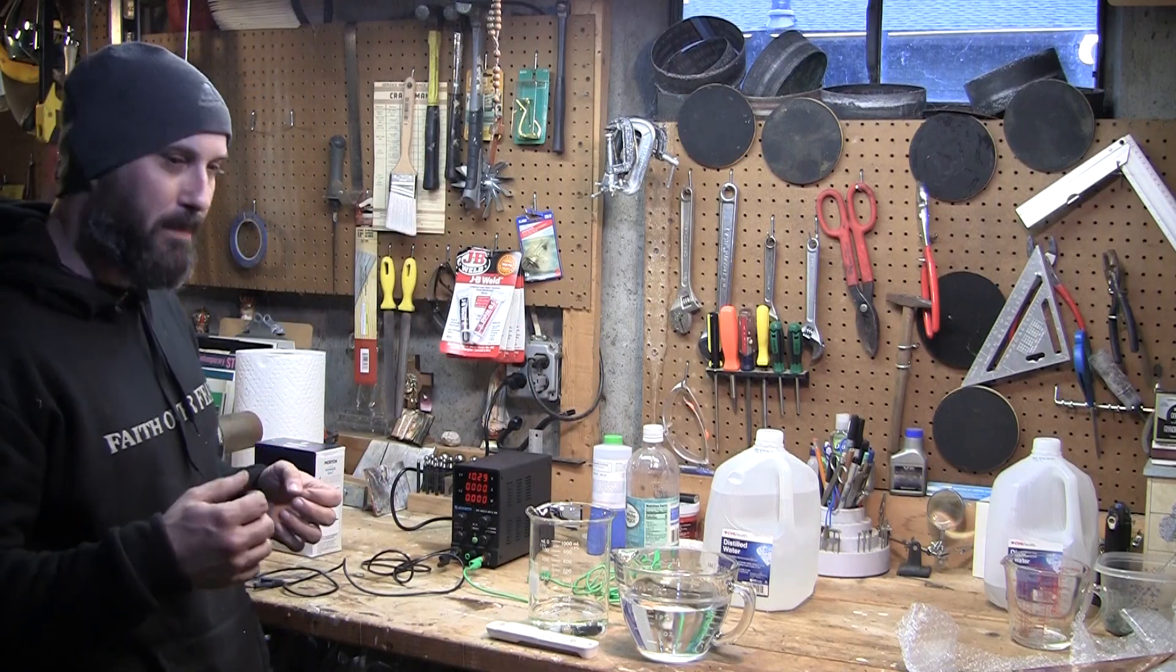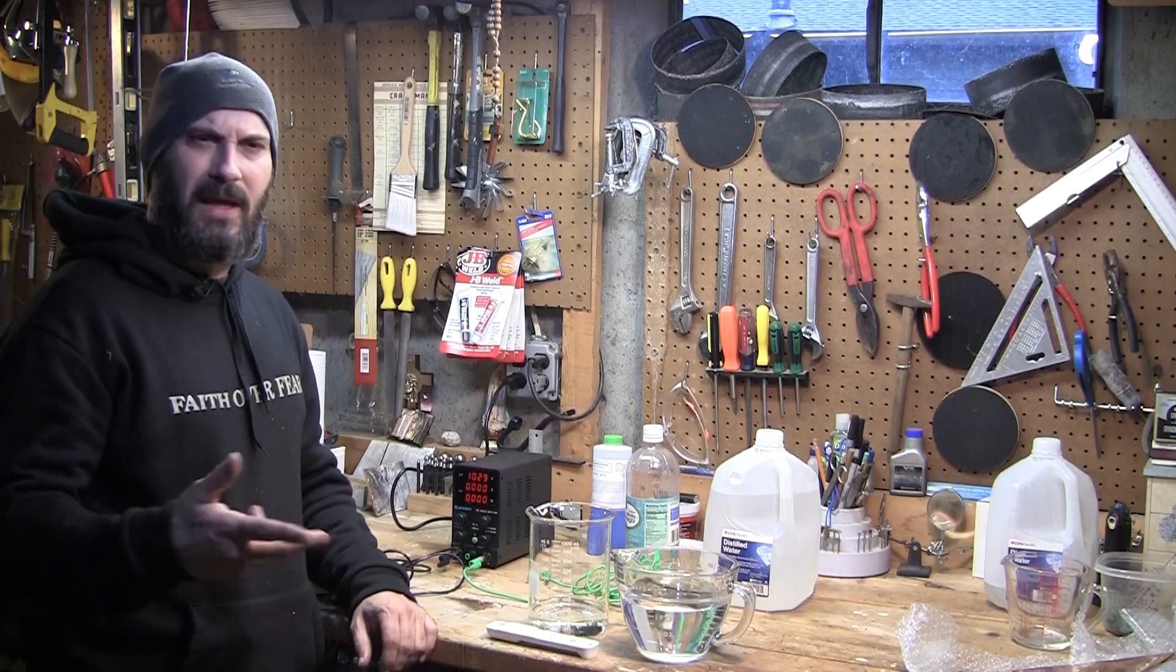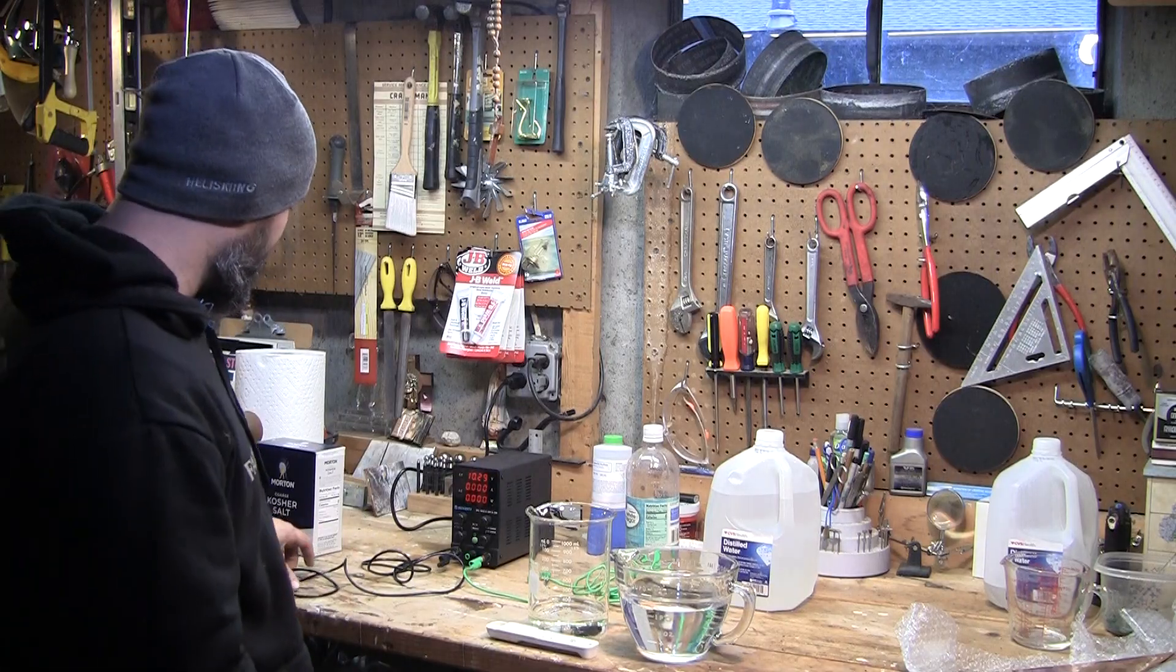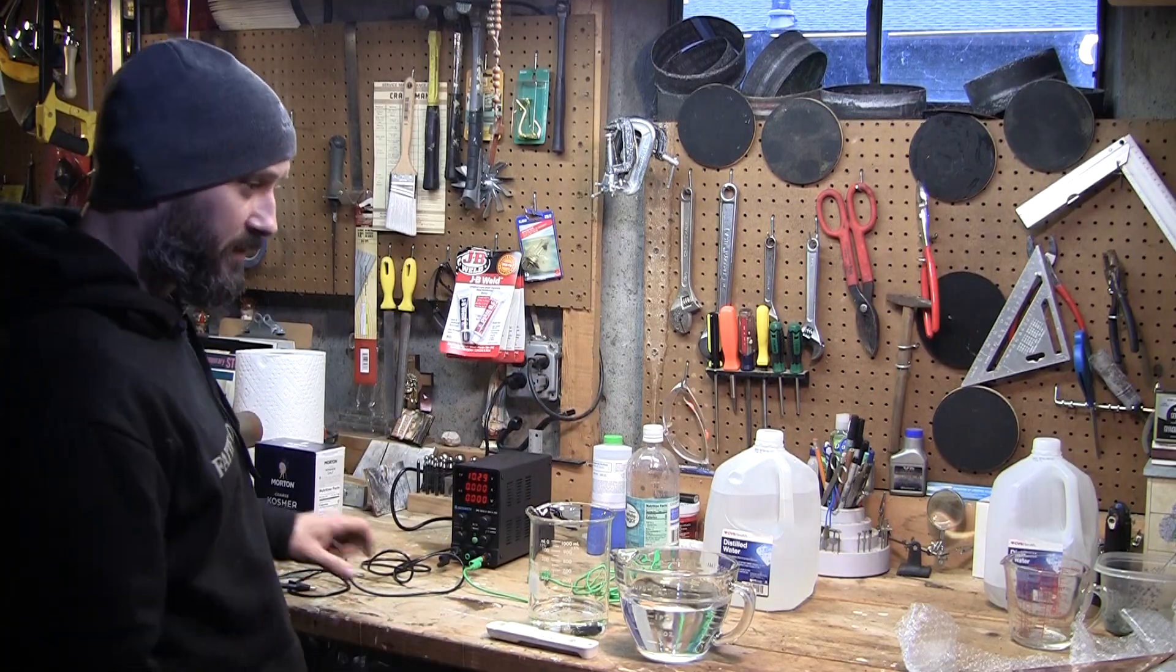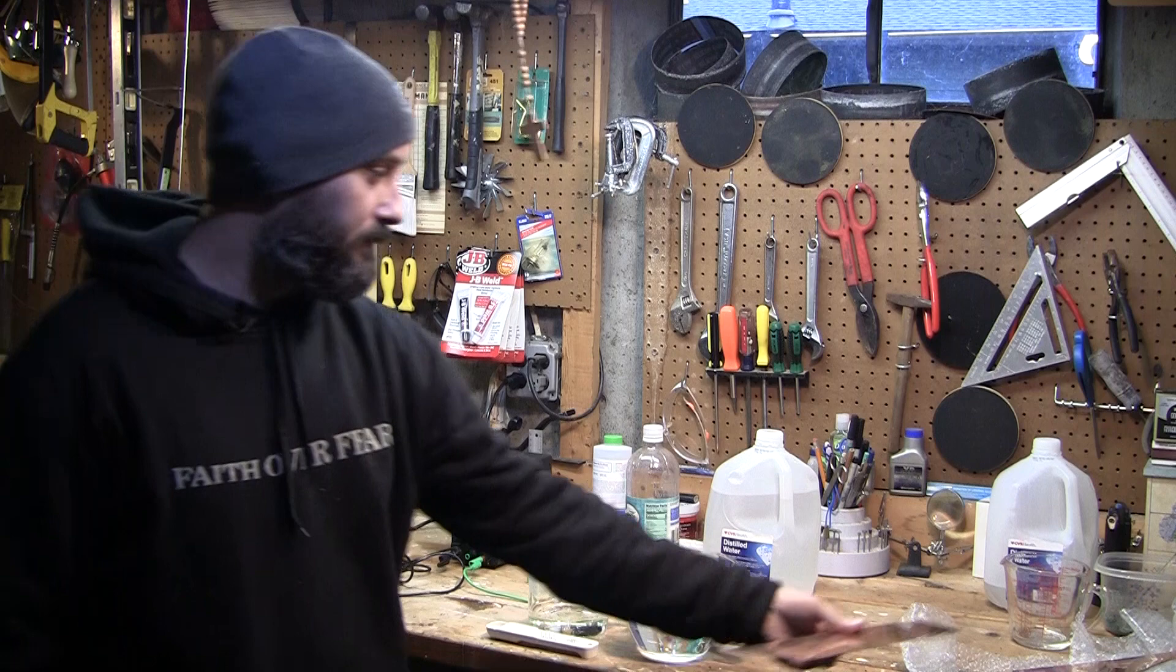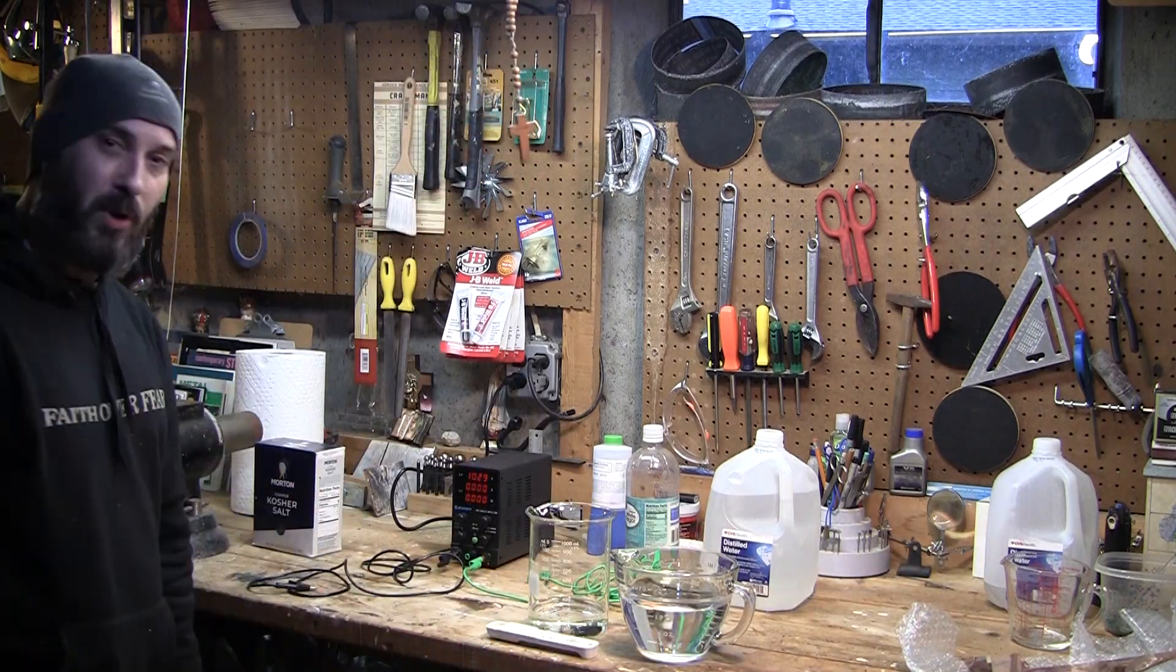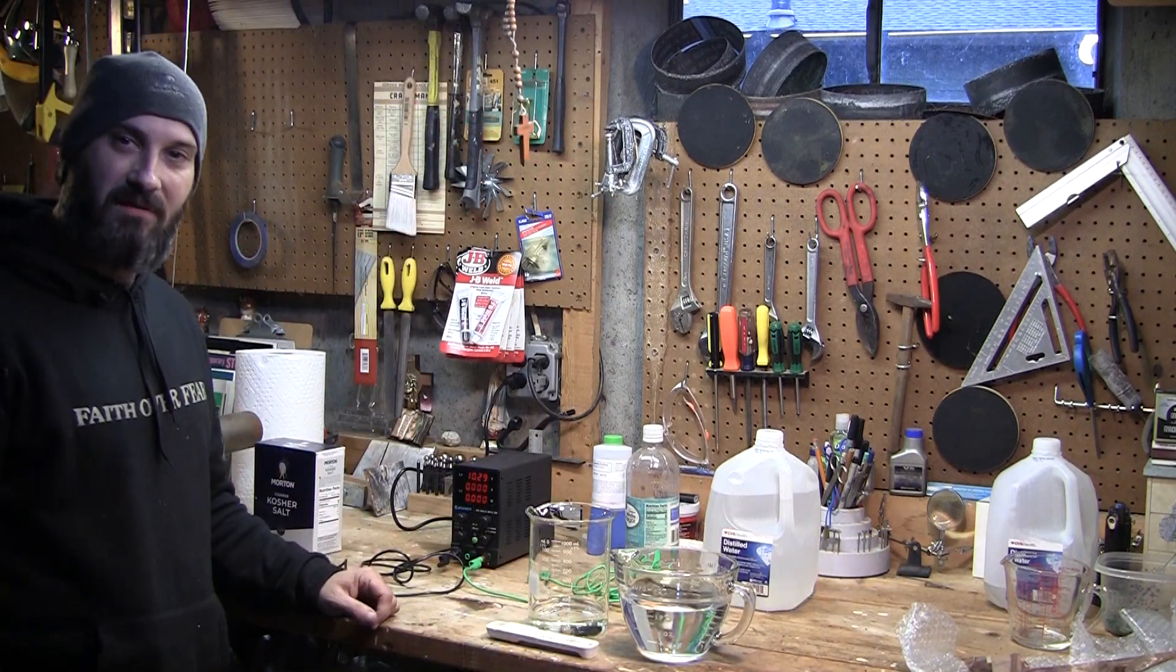And what I'm technically making is copper acetate. To make it copper sulfate, we just add Epsom salt at the end. But just using distilled water, vinegar, salt, and some copper, we're going to make some copper acetate in about 4 to 12 hours.